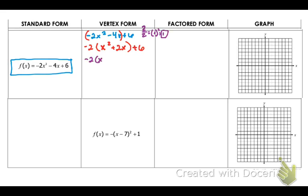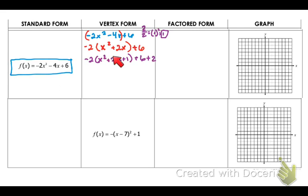Half of 2 squared gives you 1 — that's the number we're working with. So I'm going to be left with negative 2 times (x squared plus 2x plus 1) plus 6. Now remember you factored out that 2, so negative 2 times that 1 is negative 2, and the opposite is going to be positive 2. So I'm left with negative 2 times the trinomial plus whatever is outside, giving me negative 2(x plus 1) squared plus 8.